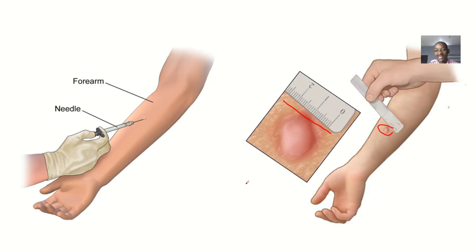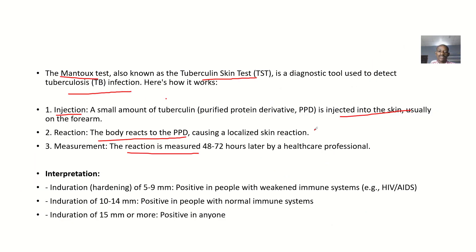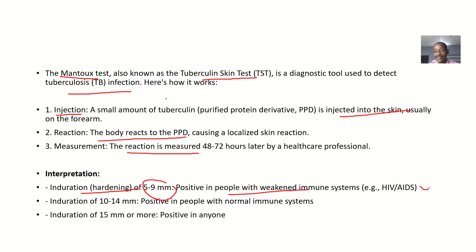Interpretation basically looks at the size of the reaction — the induration. If there is a reaction and hardening, and the hardening is between 5 to 9 millimeters, it is positive in people with a weakened immune system. So this person has tuberculosis and a weak immune system, so the body is reacting only a little to it.